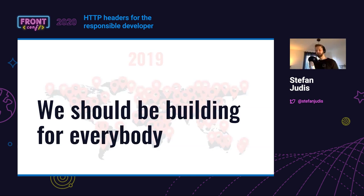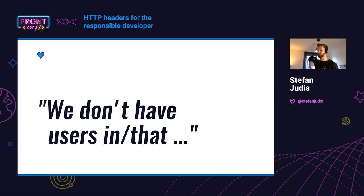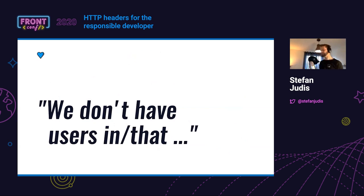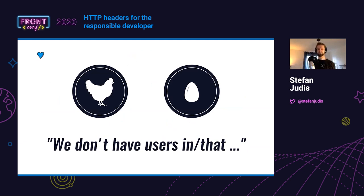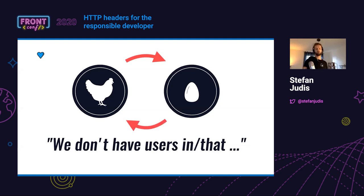When you build for the web, you might still have discussions where someone says we don't have users in a certain region, or users under a certain condition. I had these discussions a lot when responsive web design came up — it was always like, 'Stefan, this doesn't have to be responsive, nobody uses that on their phone.' But when you do these kind of statements, you're creating a chicken-and-egg problem. Because when you're not building things for people under certain conditions, these people won't use the stuff that you built. And it is as easy as that.